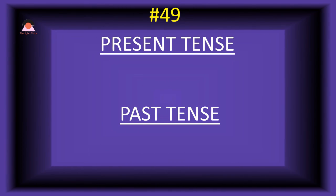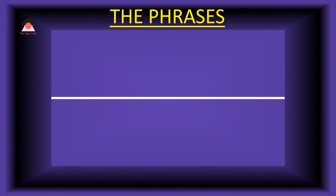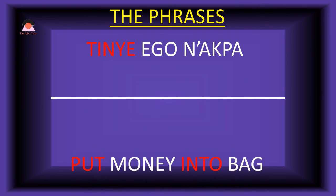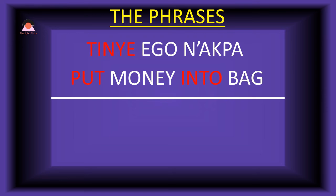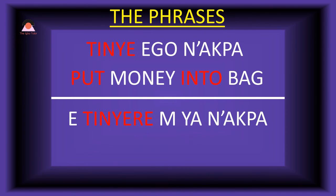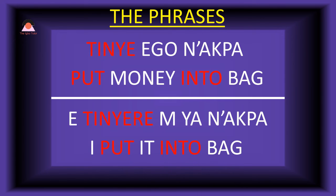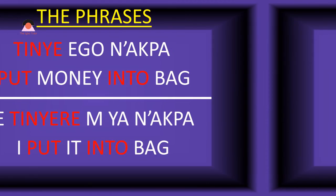Word number forty-nine: 'tinye,' meaning 'put into.' The past tense of tinye is 'tinyere,' also meaning 'put into' — put is the same for both present and past. Present tense phrase: 'tinye ego na-ba' — put money into bag. Past tense: 'tinyere miya na-ba' — I put it into bag.